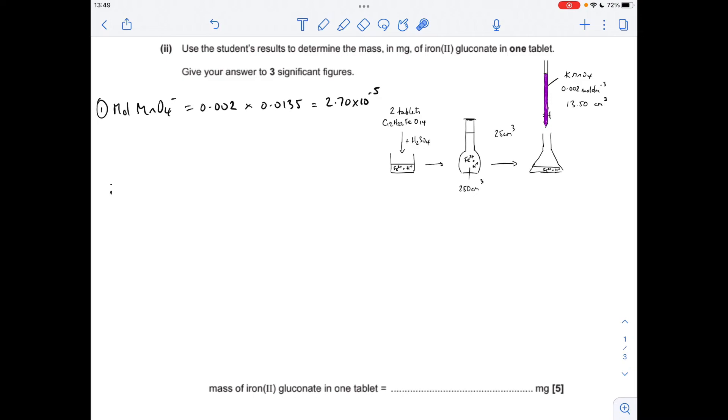So first thing we do is work out the moles of MnO4- used in the titration, concentration times volume in decimeters cubed, 2.70 times 10 to the minus 5.